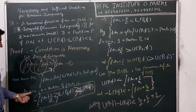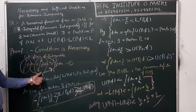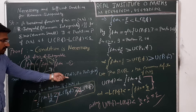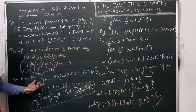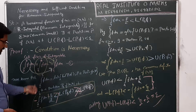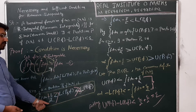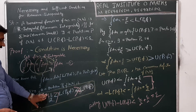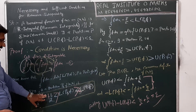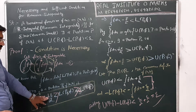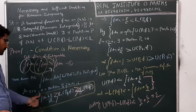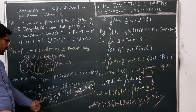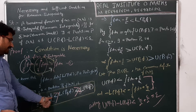We know that the lower Riemann integral is the least upper bound of the lower Riemann sums. If it is the least upper bound, then for any value smaller than it, that value is no longer an upper bound. So the integral from A to B minus epsilon by 2 is less than L(P1,F).